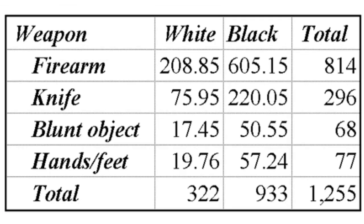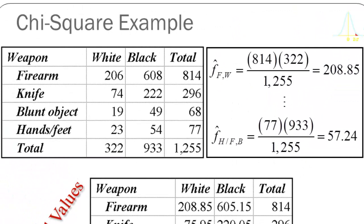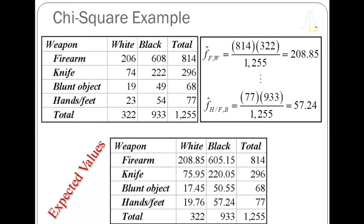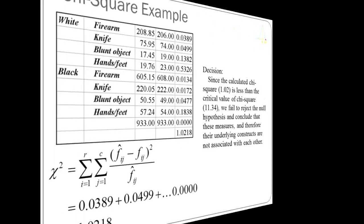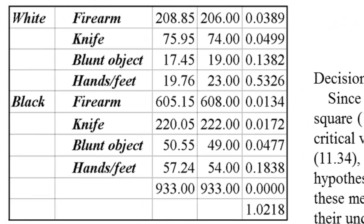For our total number of criminals — in this case 1,255 — I discovered that I should observe about 208 white criminals who used a firearm in the commission of a crime, compared to the 206 I actually observed. We're going to calculate the expected values for all of those cells so that we'll have the observed and the expected, and then put them into a table to make it easier to calculate our chi-square statistic. To make this table, I just take all the cells of that original cross-tabulation and list them in order — for white criminals: firearm, knife, blunt object, hands and feet; and then the same for black criminals.